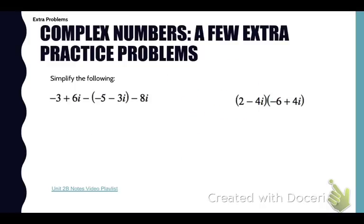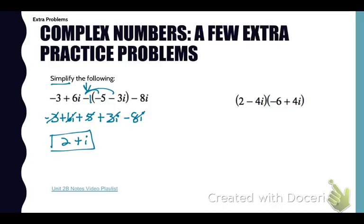Now go back to your notes packet and let's work a few extra problems. We need to simplify. We're just going to do what we're told. Notice that we have a subtraction in front of that parentheses. So that means we're going to think of that as -1 and we're going to distribute that -1. So we get -3 + 6i + 5 + 3i - 8i. Then combine your like terms. -3 + 5 is 2, 6i + 3i and -8i is positive i. We're going to write that in standard form.